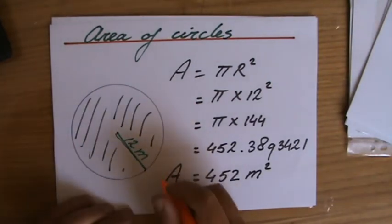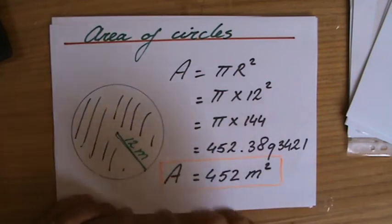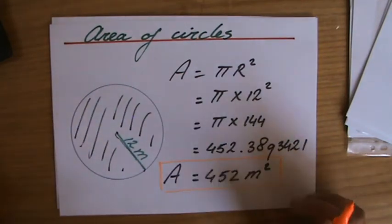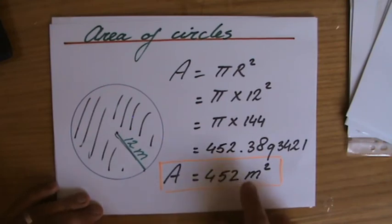The area of this circle, and it's not drawn to scale of course, a radius of 12 meters. You need quite a lot of paper for that. But anyway, the area is 452 meters squared.